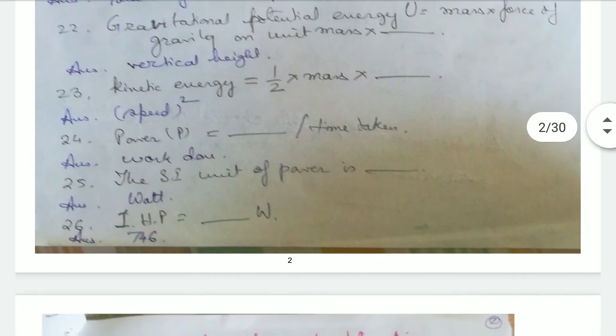Power P is equal to work done divided by time taken. The SI unit of power is watt. One horsepower (HP) is equal to 746 watts.